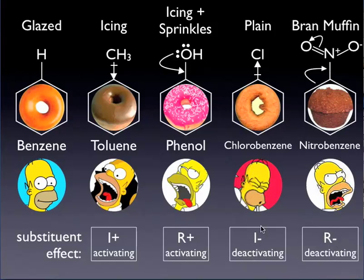This covers all the possible situations we can have in terms of substitution in our benzene ring. Depending on the substituent added, we get either enrichment of electron density and activation towards electrophilic attack, or alternatively we withdraw electron density, making for a less sweet donut that is less disposed to undergoing electrophilic aromatic substitution.